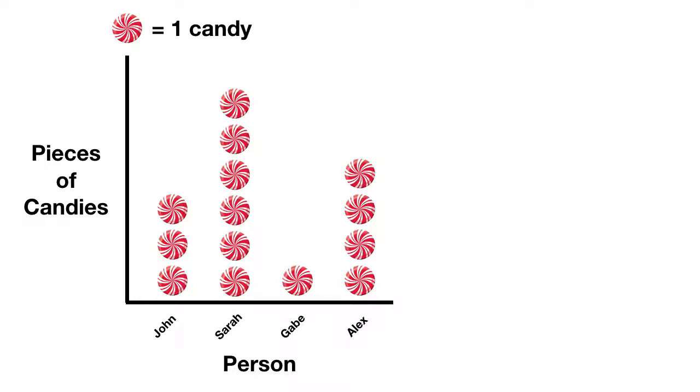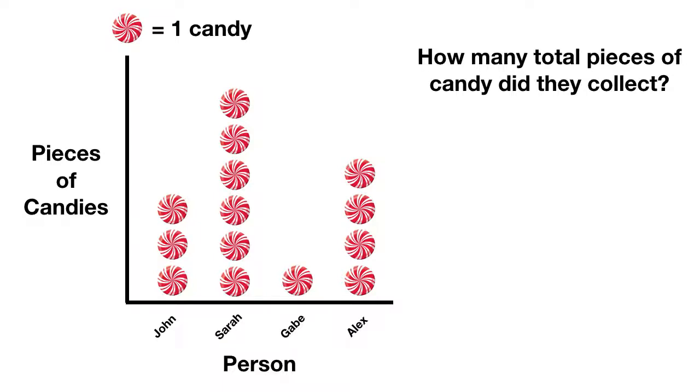Our first question is how many total pieces of candy did they collect? Well, to find the total, we'll have to add up every person's candy. We can count that John got one, two, three. Then we'll add in Sarah's, one, two, three, four, five, six.